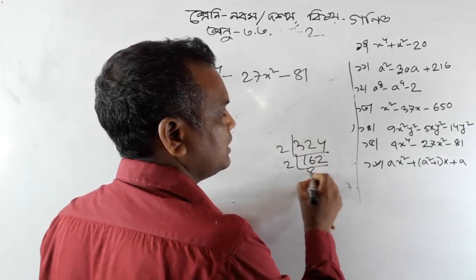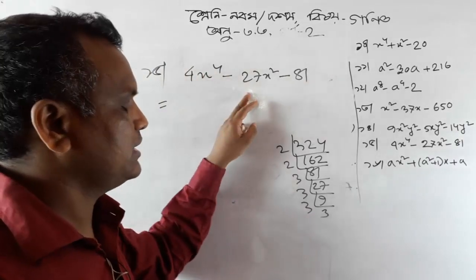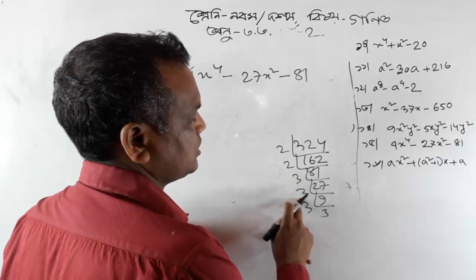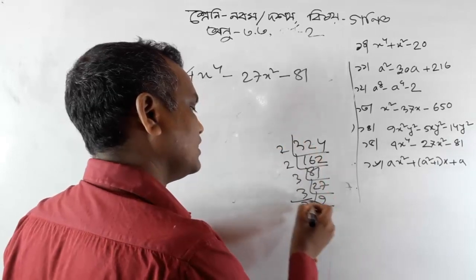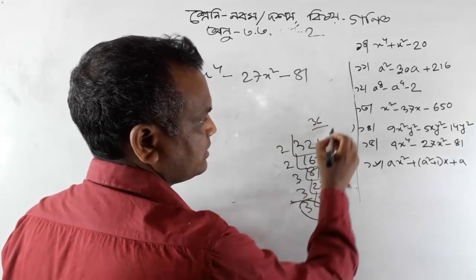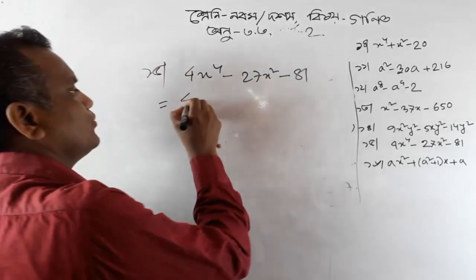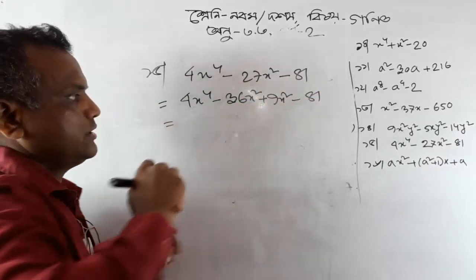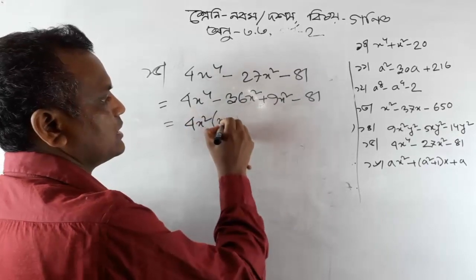It's 180, and 2 times 81, 3 times 27, and 3 times 9, and 3 times 3. Here's 4x to the power 4. 130x squared plus 9x squared minus 1. Look, there are 9x squared minus 1. So this is common. The 4x squared is common. Common is x squared minus 9.